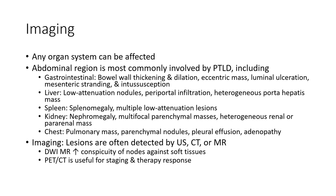Spleen findings include splenomegaly and multiple low attenuation lesions. Kidney findings include nephromegaly and multiple renal parenchymal masses or heterogeneous renal mass. Chest findings include pulmonary mass, parenchymal nodule, pleural effusion, and adenopathy.